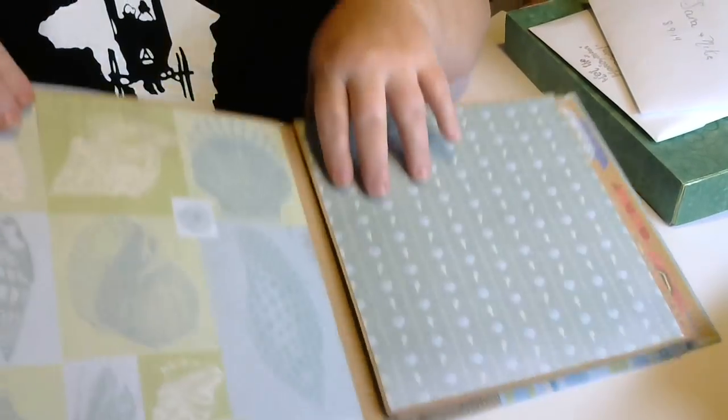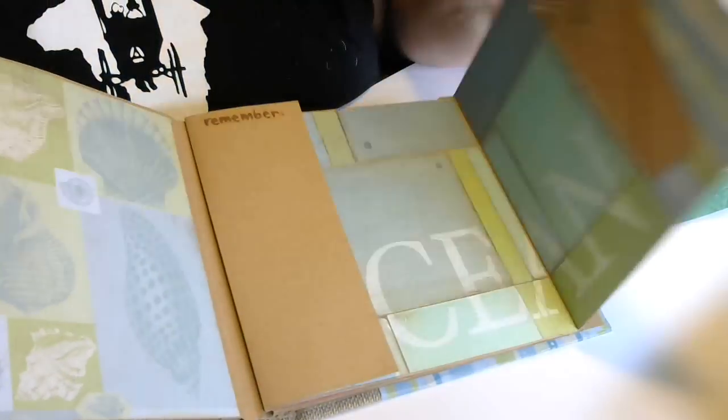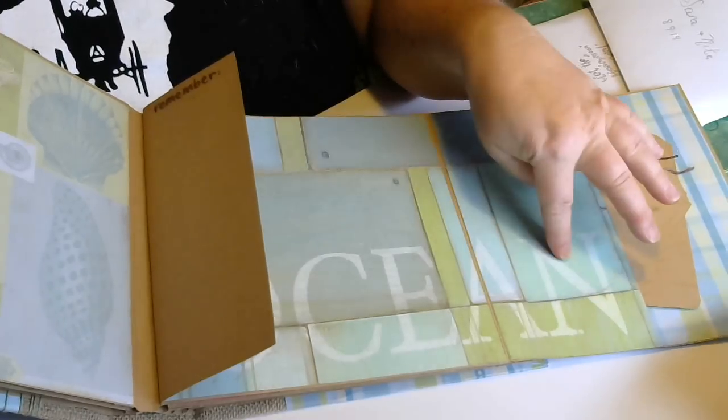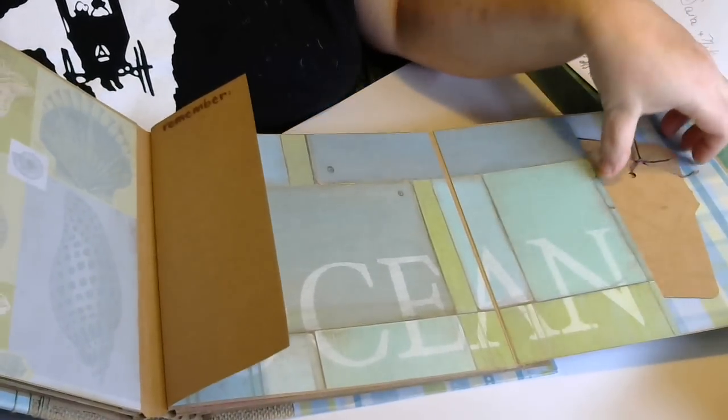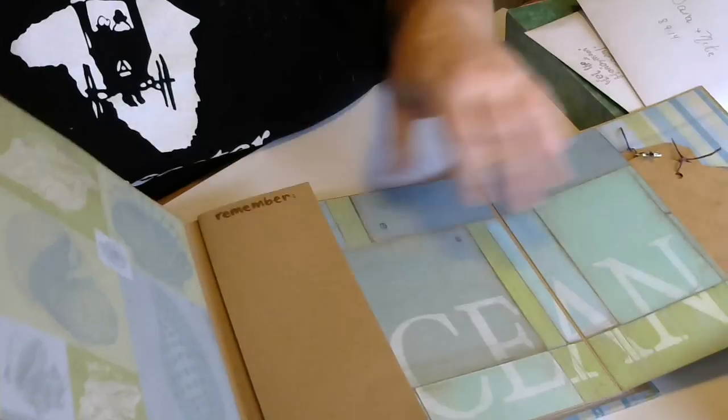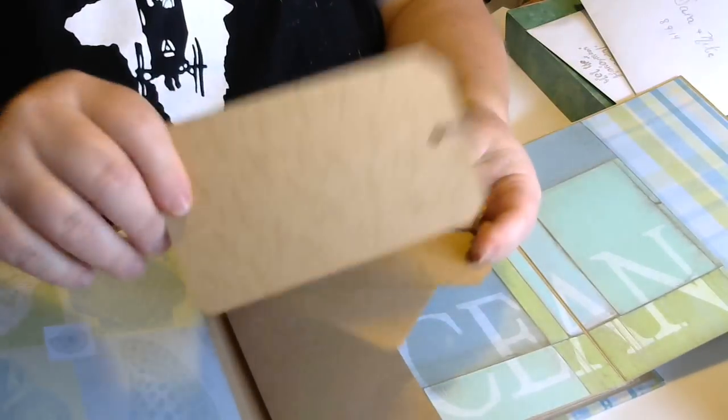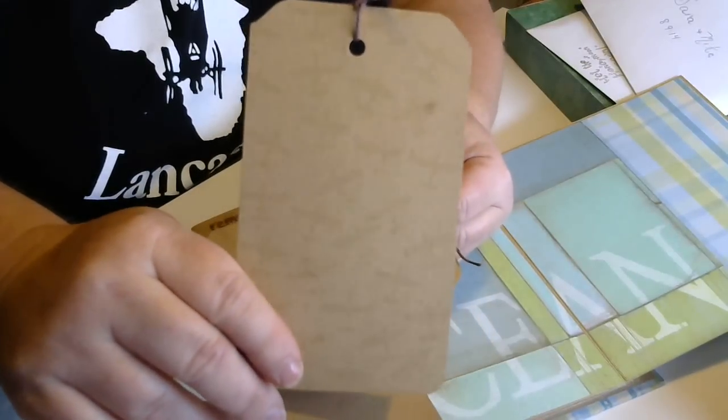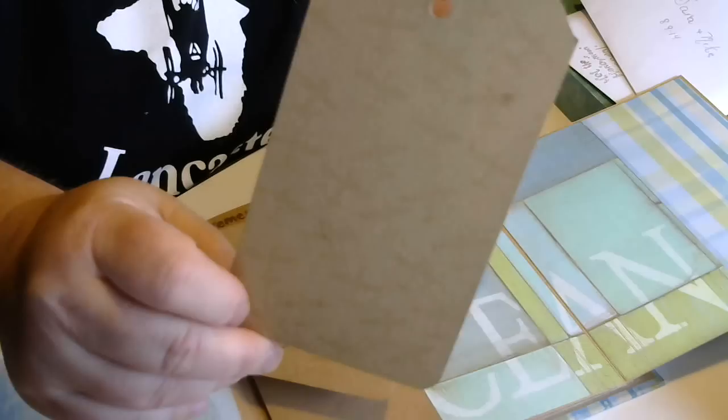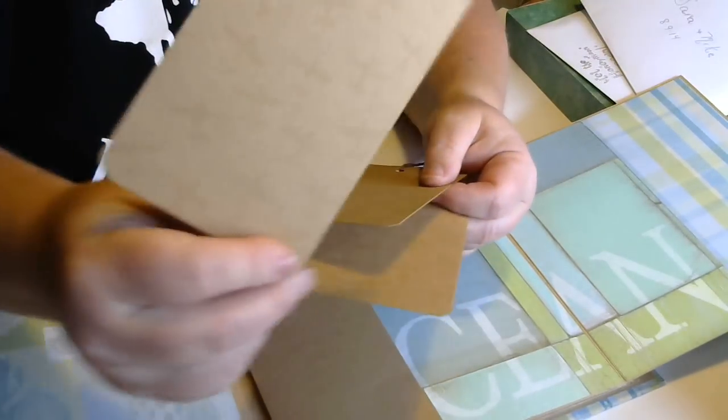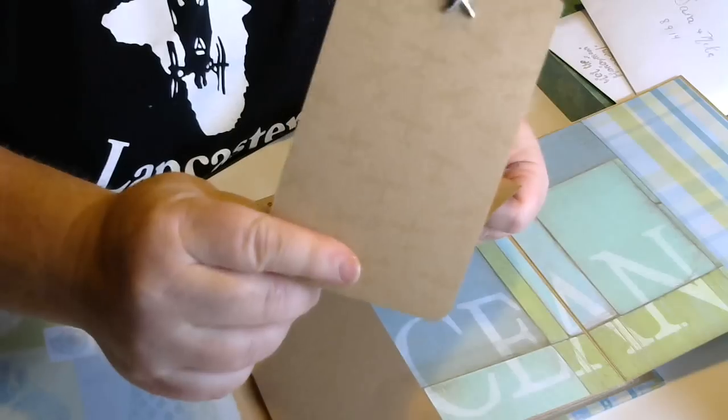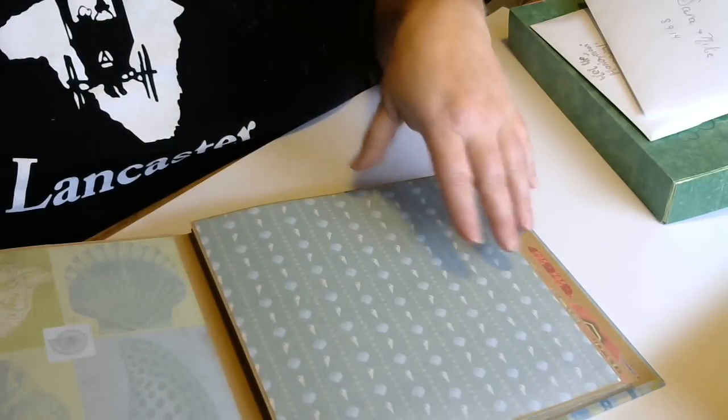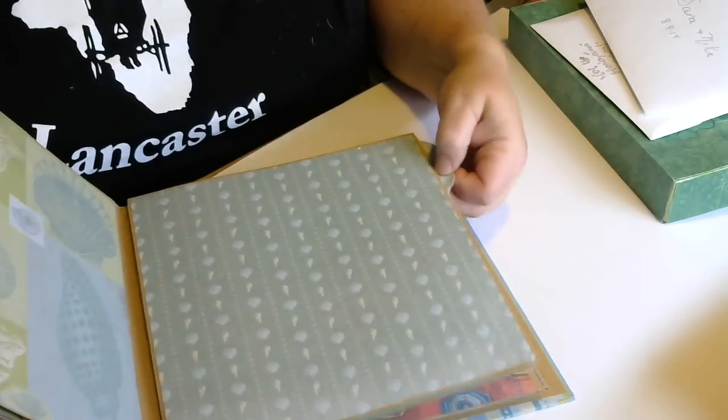And this is the next page. On this one I used paper that said ocean and I wanted to get the rest of the letters in, so I just made it a pocket on the next page. And this one says again remember. And then these tags I stamped airplanes with the same antique linen distress ink. So it just kind of dried almost clearish. It's just enough for you to be able to see it in the background. And I put a little charm on that.